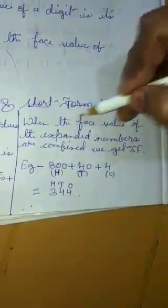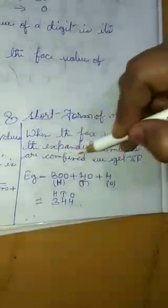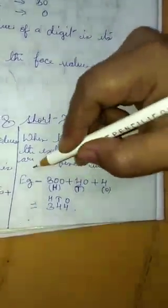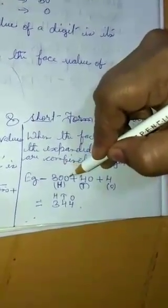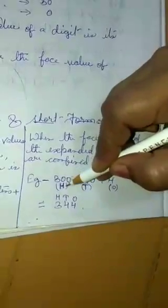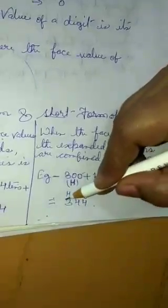Now, let us come to the short form of numbers. When the place value of the expanded numbers are combined, we get short form. You can understand from this example: 300 plus 40 plus 4. This 300 comes in hundreds place, 40 in tens place and 4 in ones place. So we will get 344.